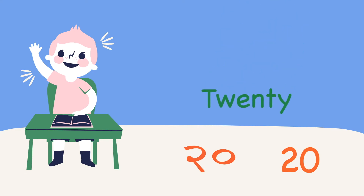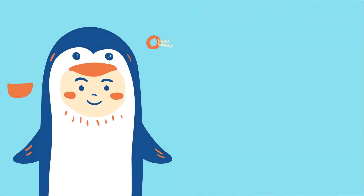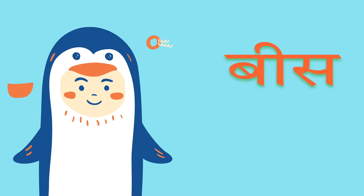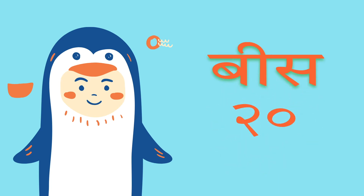20 in Hindi is 'bees'. This is how we write bees in Hindi. That's two and zero — do aur shunya — bees.